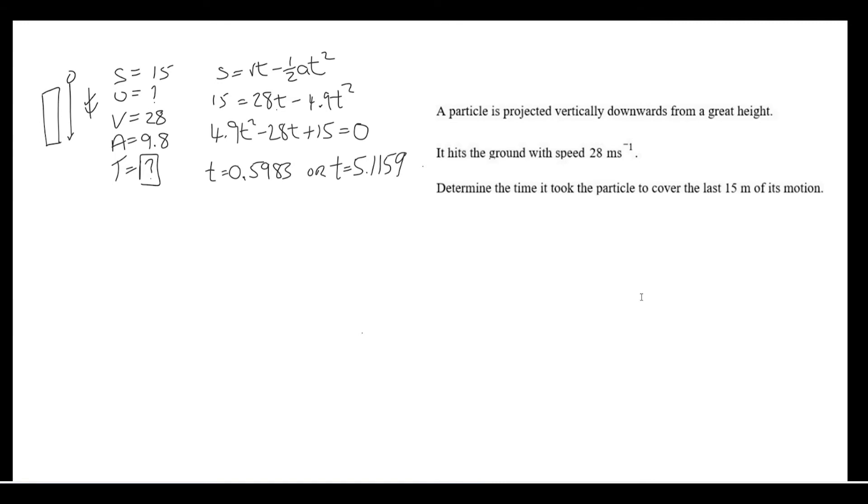Now, the two answers we get here are for two slightly different situations. We have an unknown initial velocity. So, the initial velocity at the beginning of this journey, which represents a 15 meter displacement, it could have been traveling up or it could have been traveling down. And these are the two times connected with those two different situations.